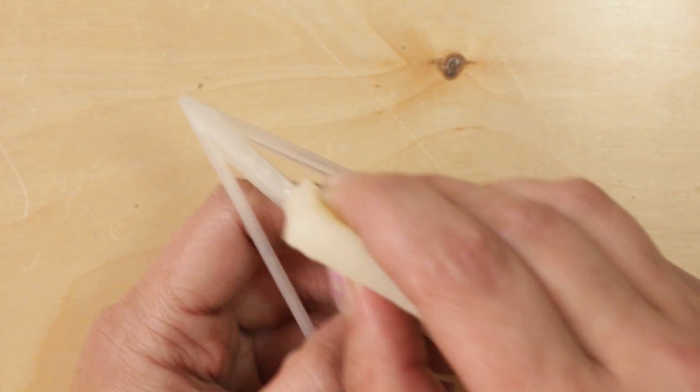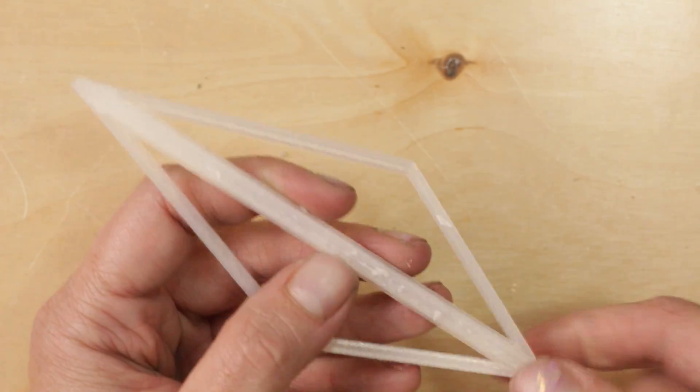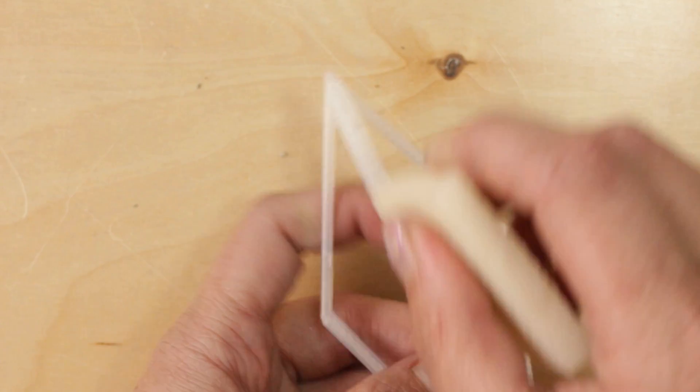If you do have any overspill from working with an industrial craft adhesive like this, it's actually super easy to clean up with a rubber gum eraser.